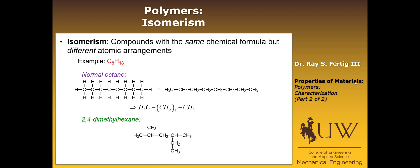This is 2,4-dimethylhexane. And as you can see, the composition is the same. There's still eight carbon atoms and 18 hydrogen atoms. But the structure that they arrange themselves in is very different. And the reason that's important is because the properties of a polymer are going to depend on the isomeric state. So you can't just take the chemical formula and know what the properties and behavior of that polymer will be. You have to know the actual isomeric state that that polymer is in.